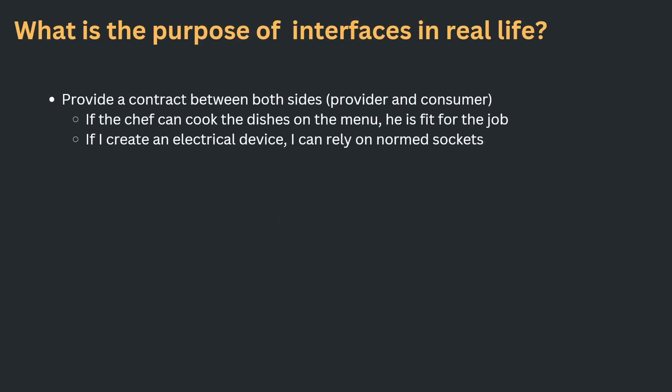Number 4 out of 6: interfaces provide a contract between both sides, the provider and the consumer. So if the chef can cook the dishes on the menu, he is fit for the job. The owner of the restaurant needs to find a chef that can cook only those dishes. It doesn't matter what kind of customers you get, as the customers don't get to choose their custom dishes — they just get to choose what's on the menu. And if I create an electrical device, I can rely on the fact that there are normed sockets everywhere. I don't need to talk to every electrical engineer that built all the buildings. I just need to know this one norm, and I can be sure that if my device can work with 240 volts at 50 hertz, then it's going to be fit to be plugged into every socket you find here in Europe.